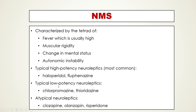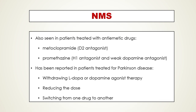However, low potency typical neuroleptics such as chlorpromazine and thioridazine, and the newer atypical neuroleptics such as clozapine, olanzapine, and risperidone have also been implicated in Neuroleptic Malignant Syndrome. NMS is also seen in patients treated with antiemetic drugs such as metoclopramide, a dopamine D2 receptor antagonist, as well as promethazine, a histamine H1 antagonist and weak dopamine antagonist.